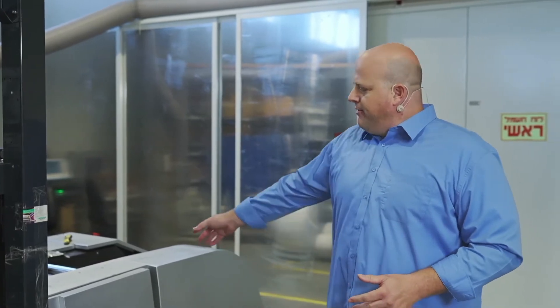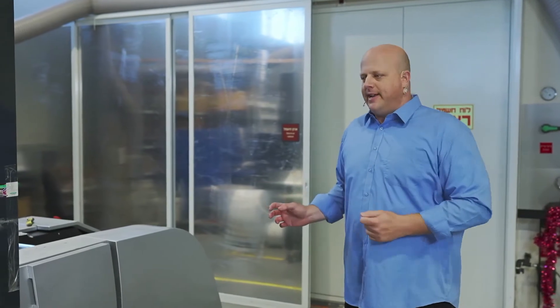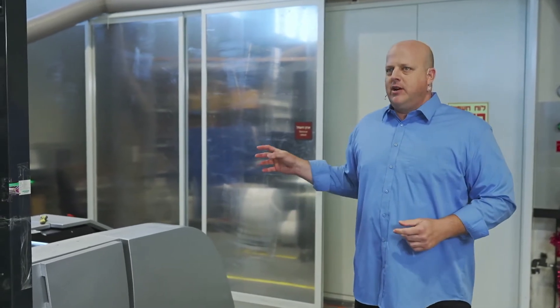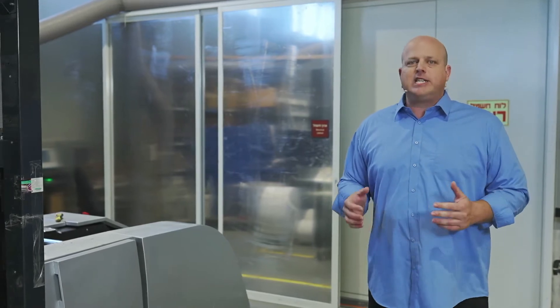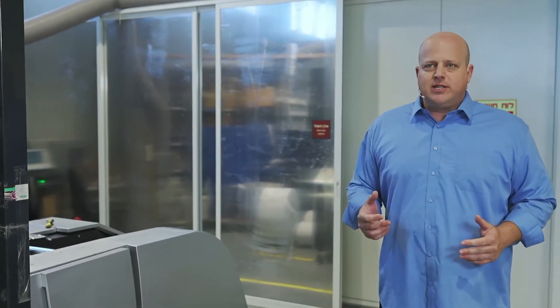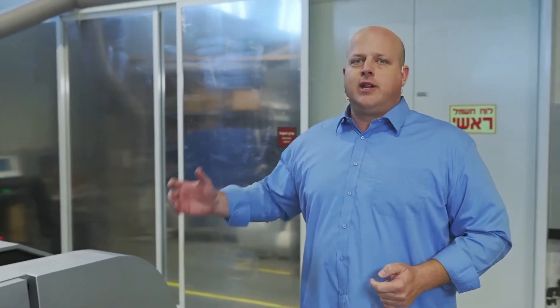Here we have the unwinder of the V12, specially designed for front maintenance. In addition to this unwinder, we're going to have enhanced productivity solutions like butt splicers, turret rewinders. This press is supposed to be a productivity beast and we want it to do non-stop printing.